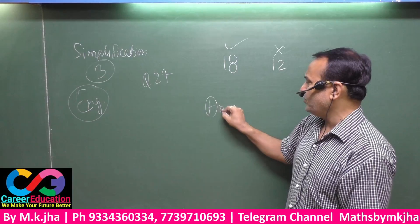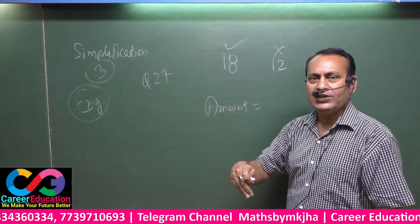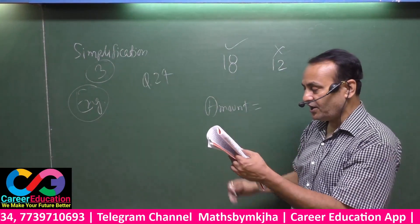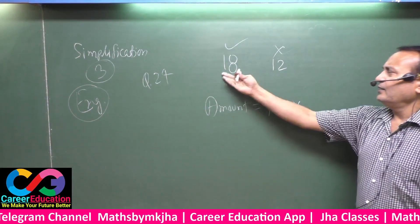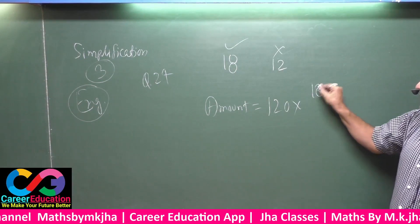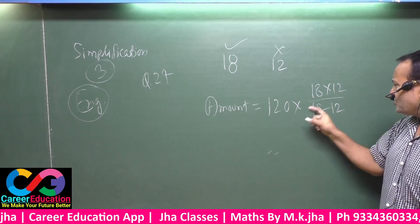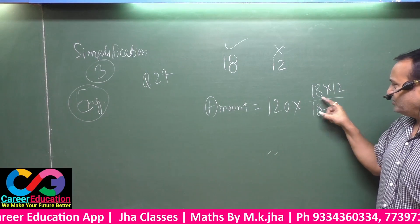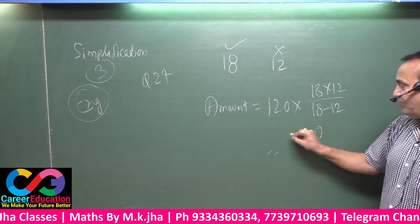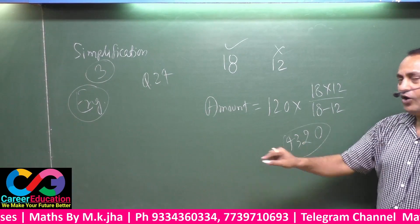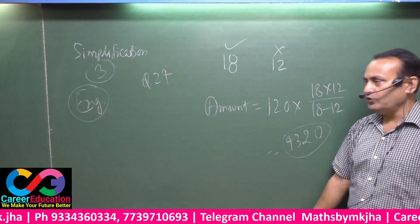Using the trick: amount equals more amount per person times product of both person counts divided by their difference. That is one hundred twenty multiplied by eighteen multiplied by twelve, divided by six. Eighteen times twelve equals two hundred sixteen, divided by six equals thirty-six. One hundred twenty times thirty-six equals four thousand three hundred twenty. The answer is rupees four thousand three hundred twenty.